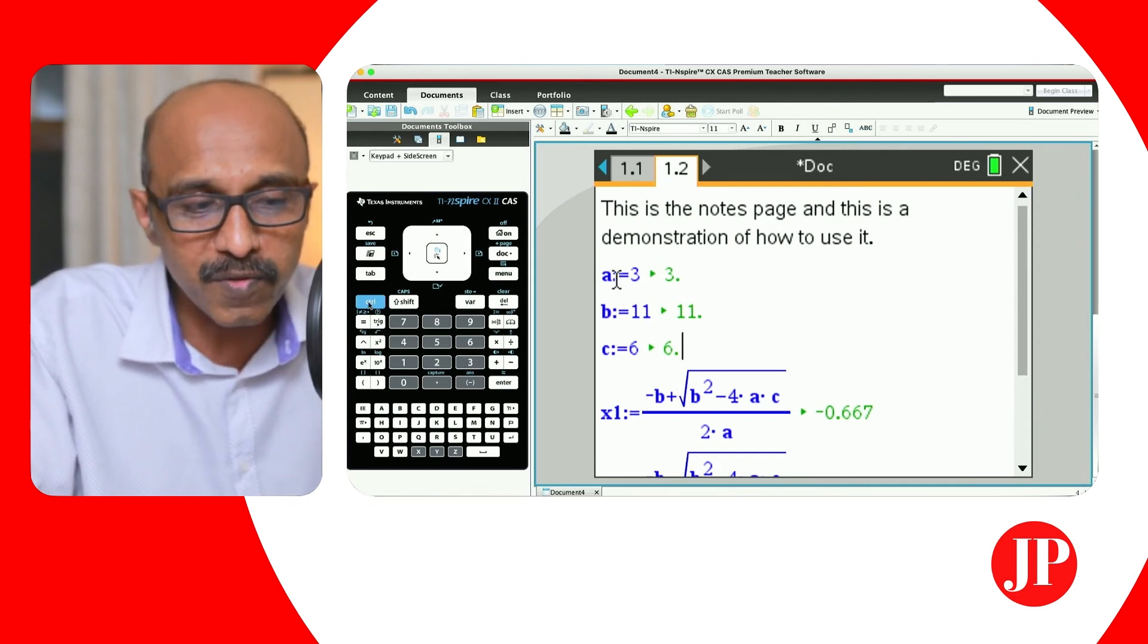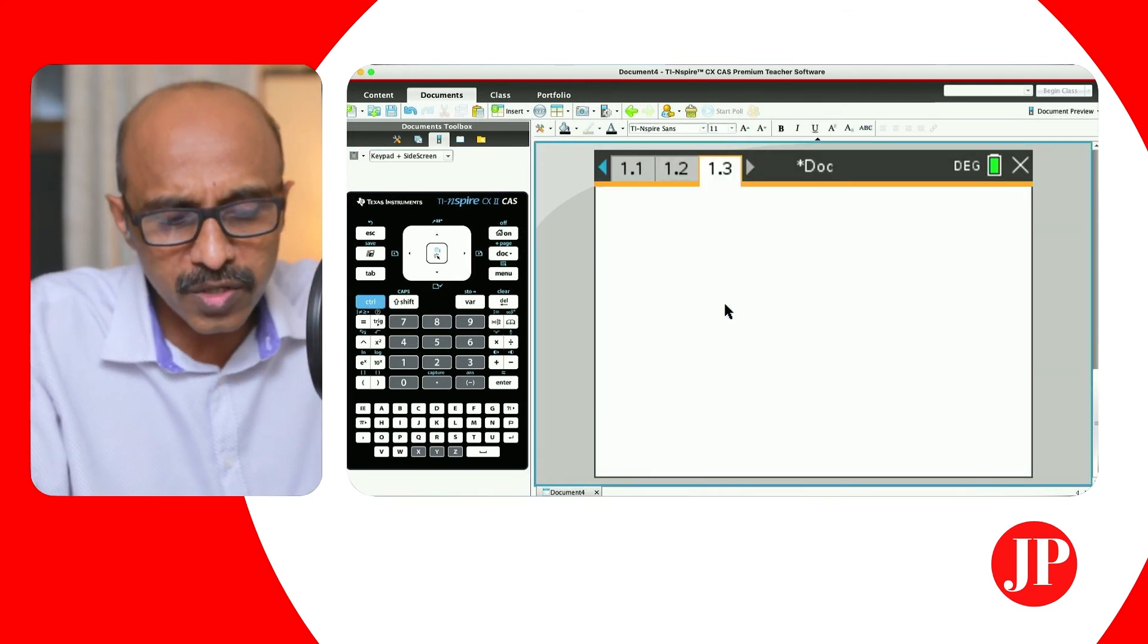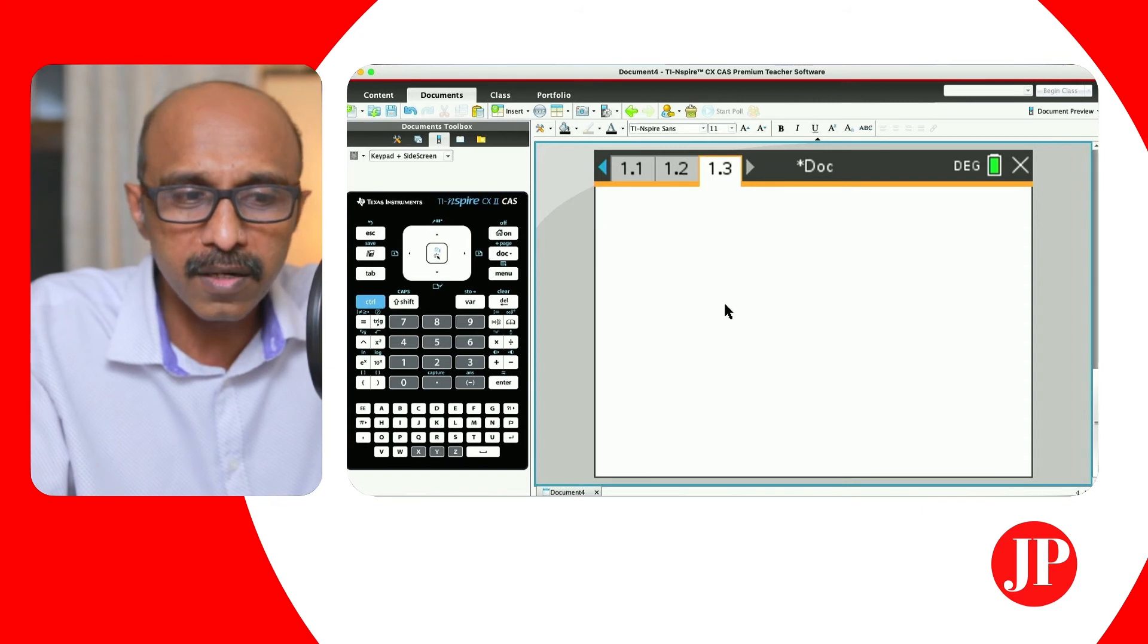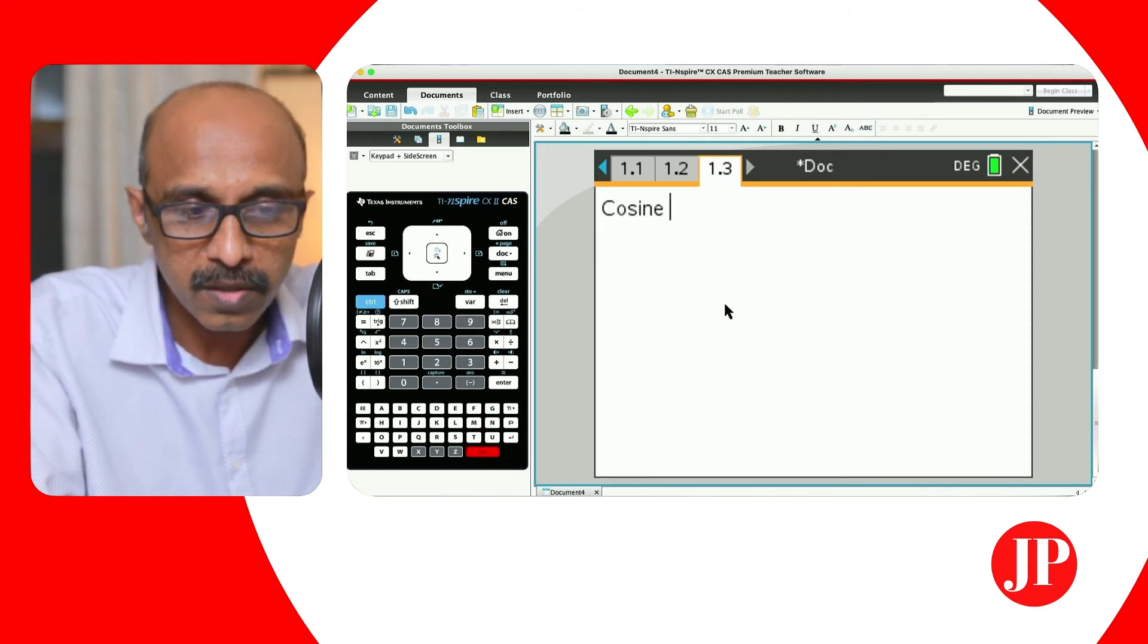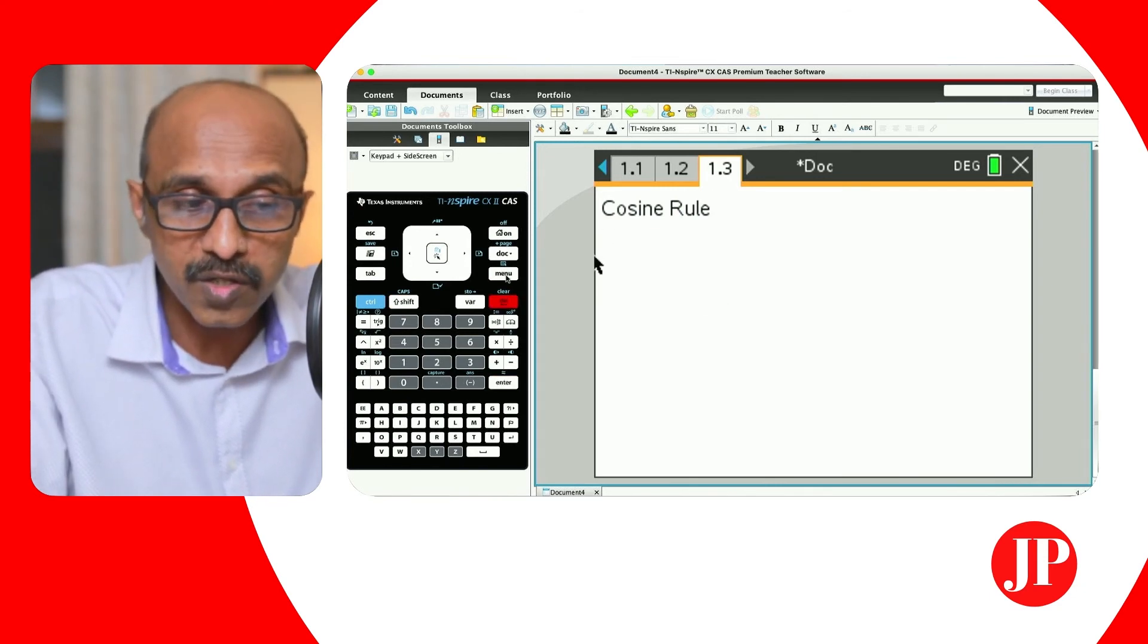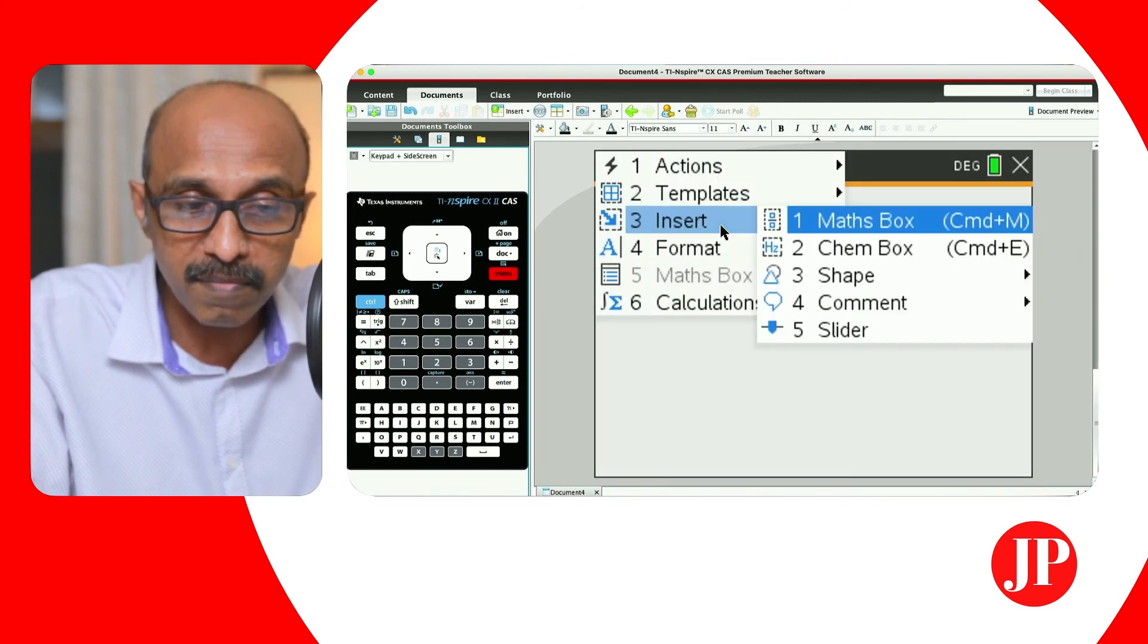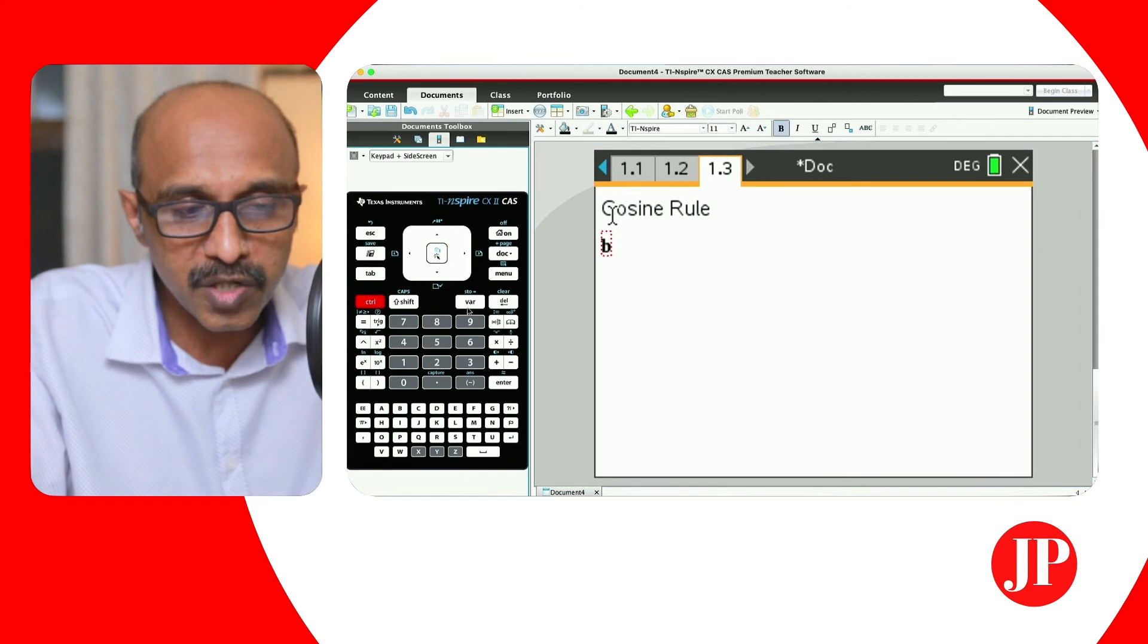So we're going to just go and add a notes page. And this time let's use something like the cosine rule. Why don't we use the cosine rule? So let's just type in cosine rule. So what we'll do is that let's just give an angle B, at box. So insert a math box first. Before you want to see the magic.